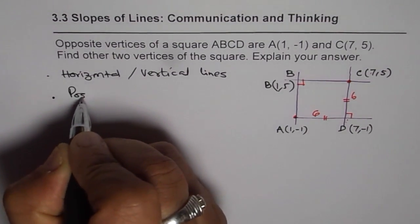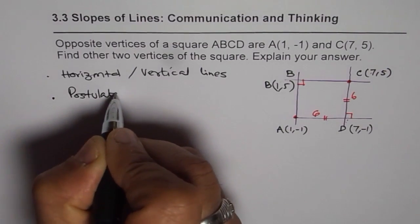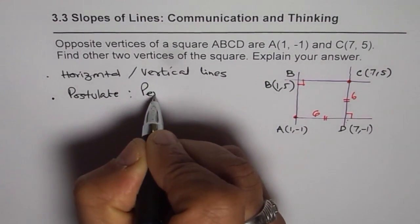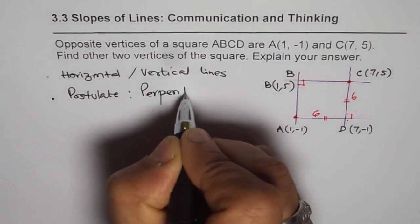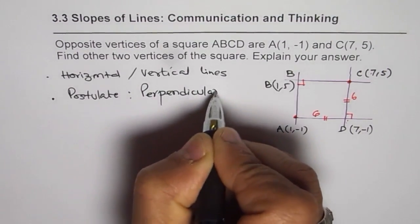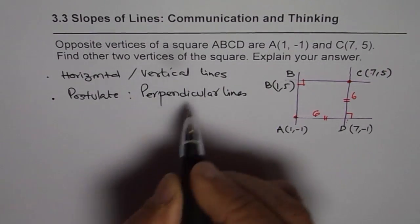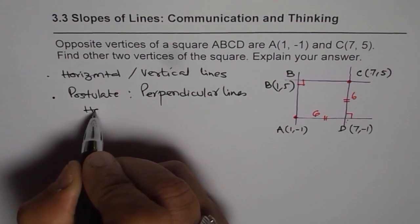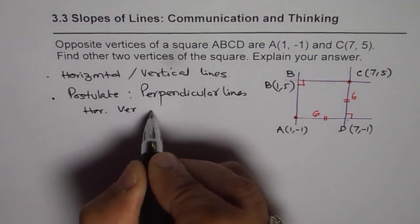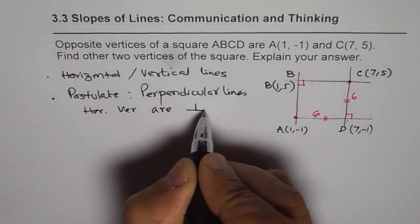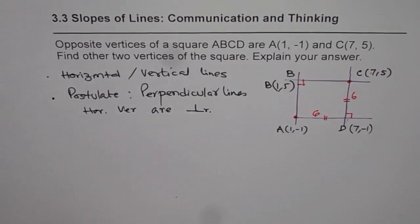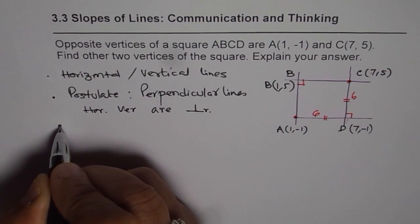Second step is, we know from the postulate of perpendicular lines that horizontal and vertical lines are perpendicular. So, we know the horizontal and vertical lines are perpendicular. So, these lines are perpendicular.